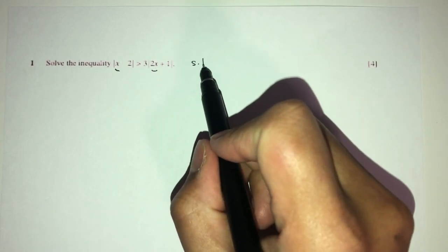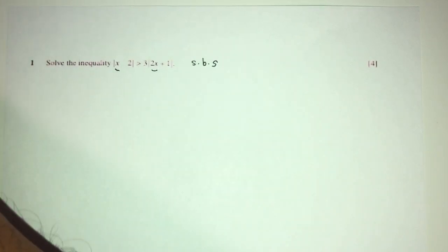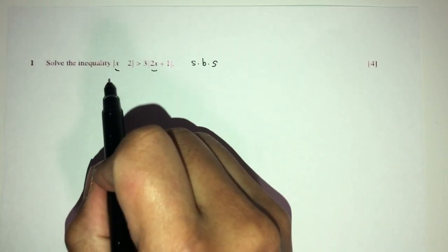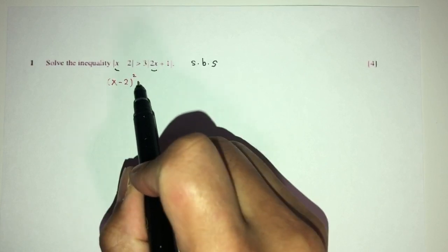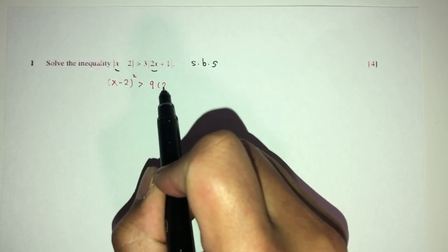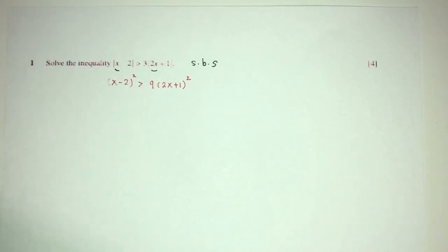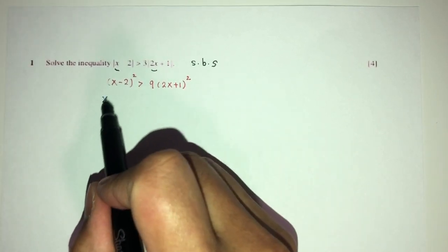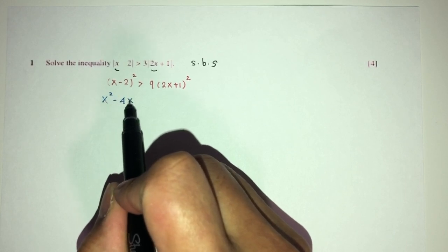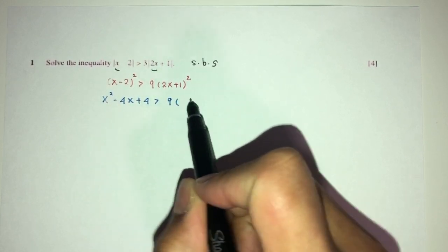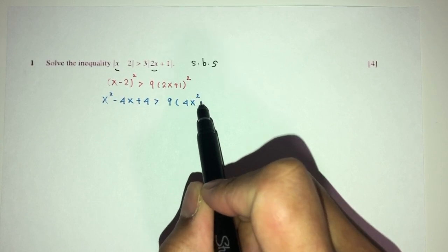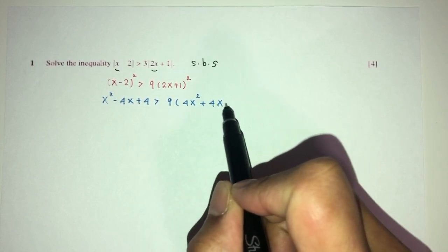Square both sides is our step number 1. That would be (x - 2)² is more than 9(2x + 1)². Now, simplify. You will have x² - 4x + 4 is more than 9 times 4x² + 4x + 1.